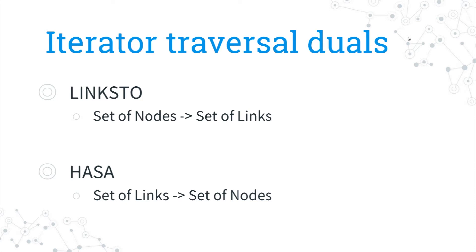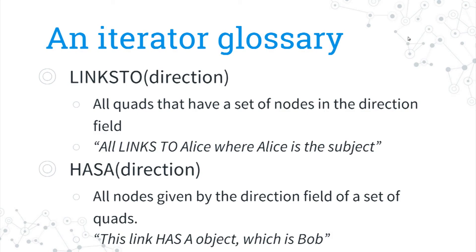With LinksTo and HasA, we can sort of walk back and forth — get all the quads with the nodes, get all the nodes with the quads — and make a traversal along the path. As we make the traversal along the path, we can therefore represent this entire query tree without fully evaluating it yet. And when we do want to evaluate it, we can do that.